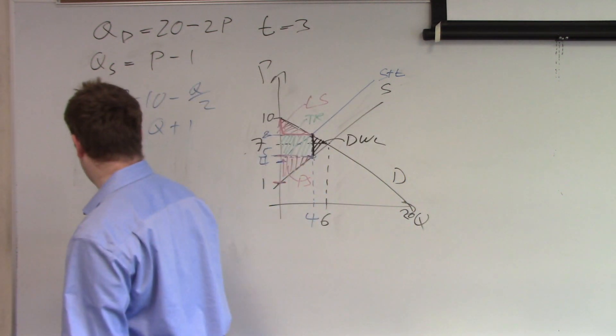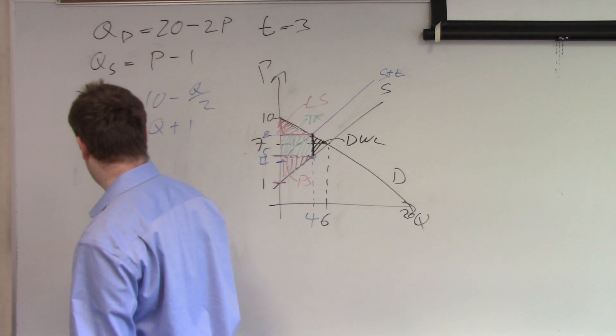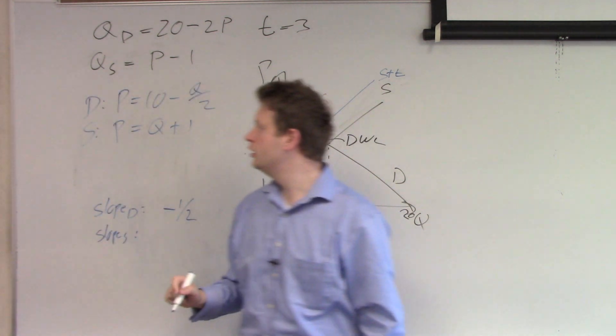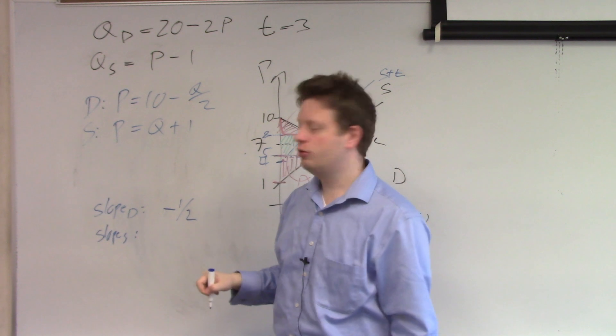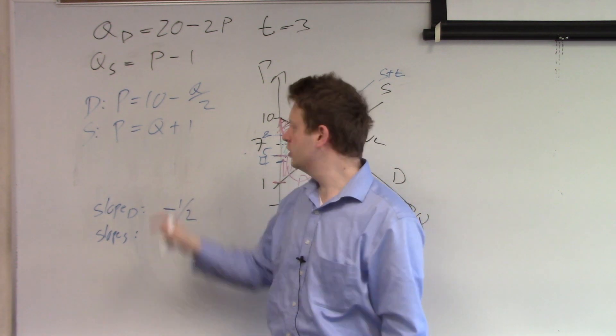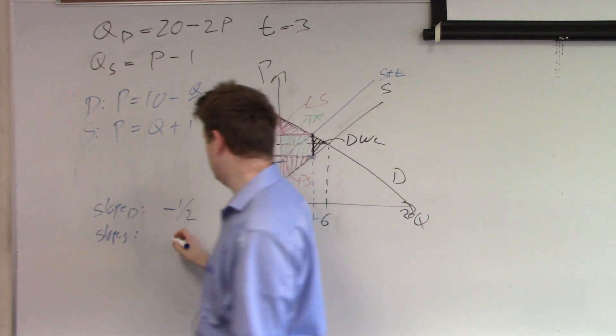And slope supply. We look at the supply curve here. And what is Q multiplied with? It's multiplied by 1. 1 times Q. So the slope is 1.